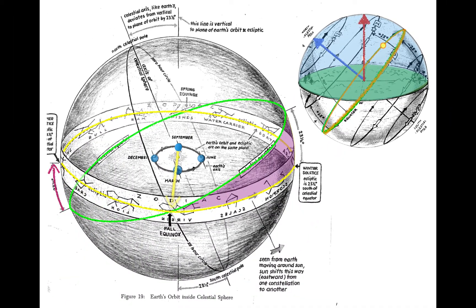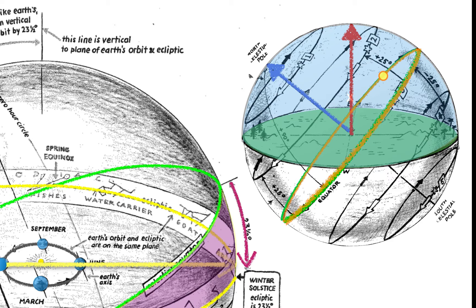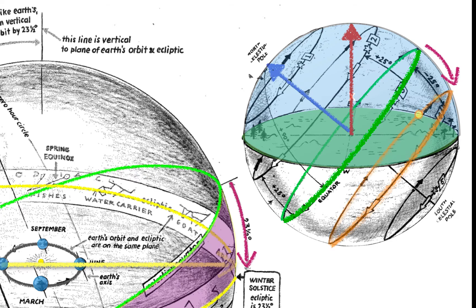Let's go back to the orbital diagram and keep going. As the Earth continues from September to December, the sun gets further and further away from the celestial equator again — and this time it's to the south of the celestial equator. On the horizon diagram the sun's path shifts downward toward the south and ultimately reaches a lowest point, where the circle is below the horizon for longer than it is above. So at this point the sun will be above the horizon for less than 12 hours, and the sun is now rising in the southeast and setting in the southwest.